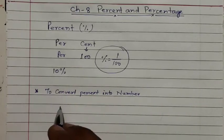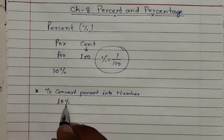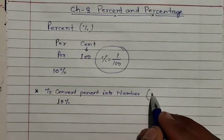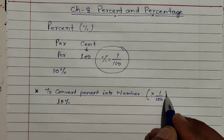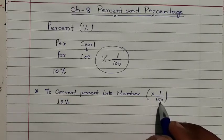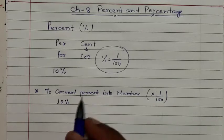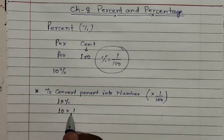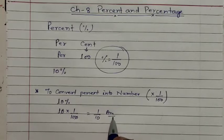Suppose we take the example of ten percent. How do we convert ten percent into a number? For converting percent into a number, we have to multiply the number by one by hundred — that is the meaning of percent. So ten multiplied by one by hundred equals one by ten. This will be our answer. It means for converting percent into a number, fraction, or decimal, we multiply by one by hundred.